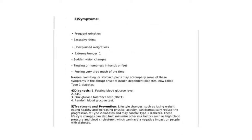Signs and symptoms associated with both Type 1 and Type 2 diabetes include: frequent urination, excessive thirst, unexplained weight loss, extreme hunger, sudden vision changes, numbness in hands or feet, feeling very tired, nausea, vomiting, and stomach pains. These symptoms may accompany the abrupt onset of insulin-dependent diabetes, now called Type 1 diabetes.